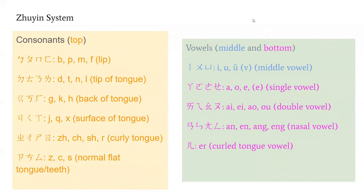We're going to have a brief overview of the Zhuyin system. As we've seen, Zhuyin is divided into consonants and vowels. The consonants are divided between the positions of the lips and tongue. We have b, p, m, f, which are sounds produced through the lips; d, t, n, l, which are produced through the tip of the tongue; g, k, h, produced through the back of the tongue; j, q, x, produced through the surface of the tongue; zh, ch, sh, r, produced through the curly tongue; and z, c, s, produced through the teeth.